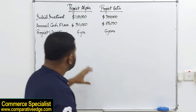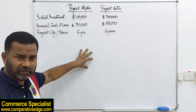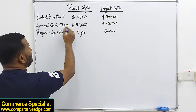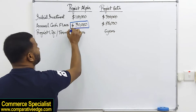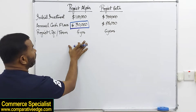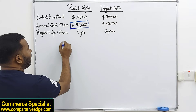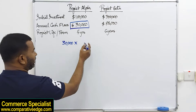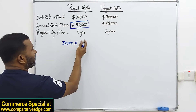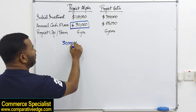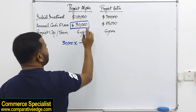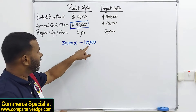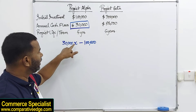How do we go about crossover rates? We form an equation. These annual cash flows are annuities, so to calculate NPV for project Alpha: every year we receive 30,000 as an annuity, multiplied by the annuity factor — which we don't know, so I am calling it X. So the equation is 30,000 times X minus the initial investment of 100,000. That gives NPV for project Alpha.